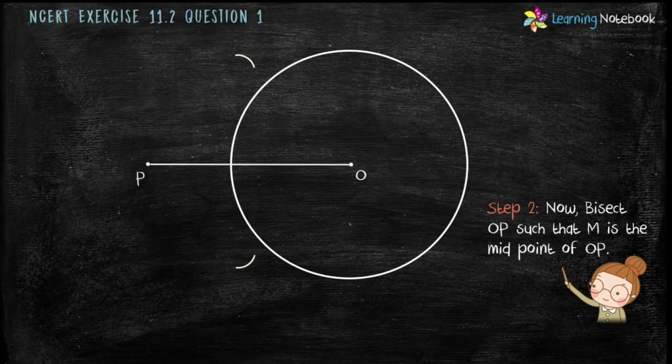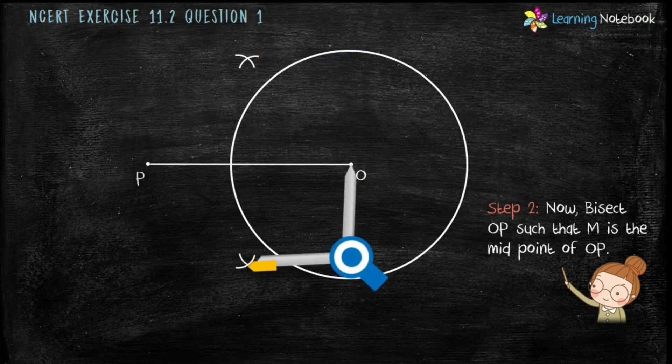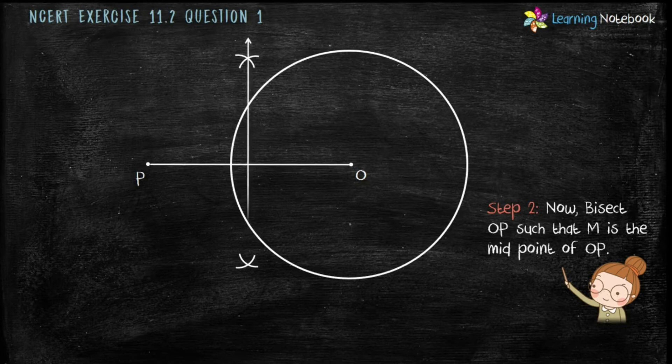Now place your compass on point P and mark the arc on both sides as shown here. Now place the compass on point O and cut these arcs on both sides. Now, join these two points.